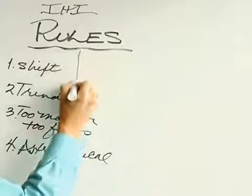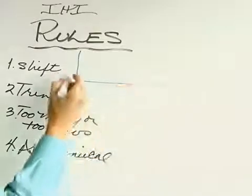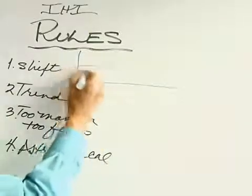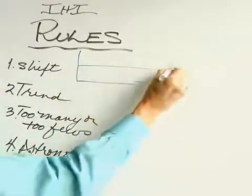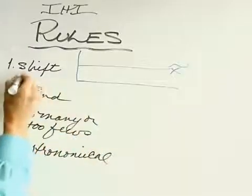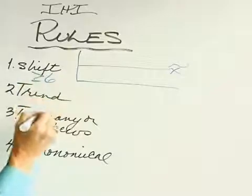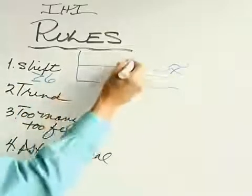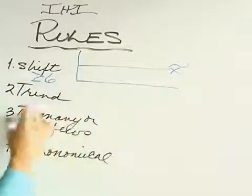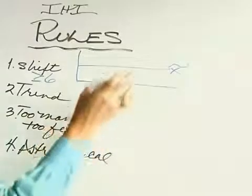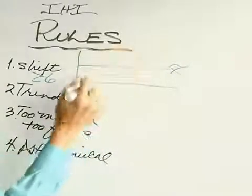A shift in the data is when you have too much of the data hanging above or below this median center line. And the way we make this determination is if you have six or more data points hanging in a group above or below the center line, that's an indication of a shift that the data have moved to a level and stayed there too long.